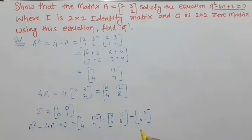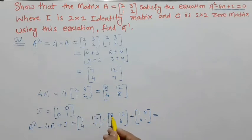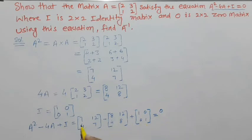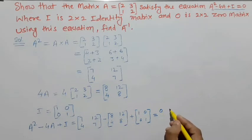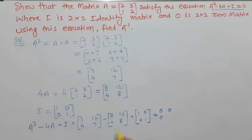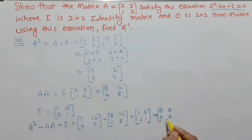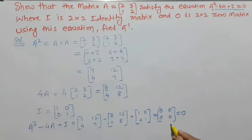Solve करने पर: 7-8+1 = 0, 12-12+0 = 0, 4-4+0 = 0, 7-8+1 = 0। यह हमारा proof हो गया — result zero matrix के equal है। यही हमें prove करना था।